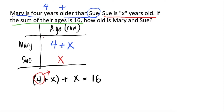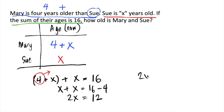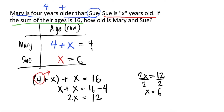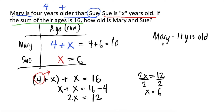So, ilipat natin yung 4 sa kabila — we will get x plus x is equal to 16 minus 4. Simplifying this, we will get 2x is equal to 12. Dividing both sides by 2, we will get x is equal to 6. So, Sue is 6 years old, while Mary is 4 plus x, or 4 plus 6, that's equal to 10. Our final answer is Sue is 6 years old while Mary is 10 years old.